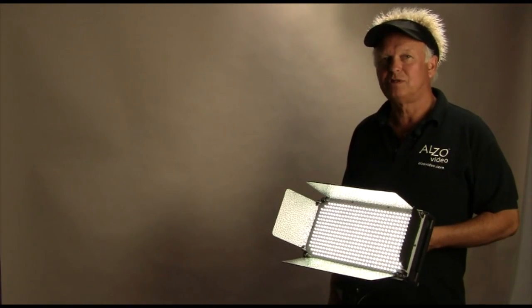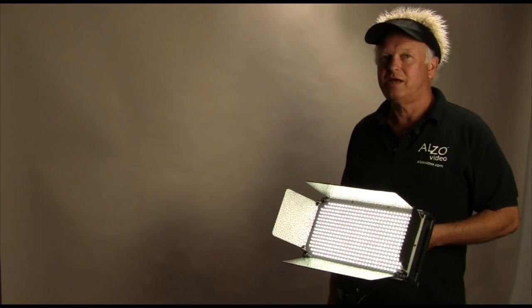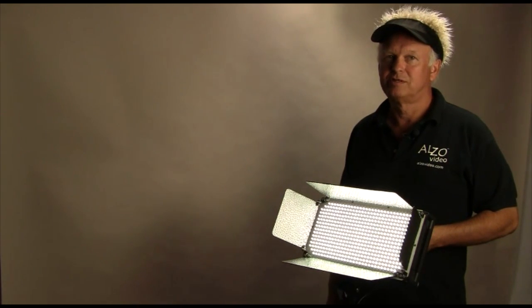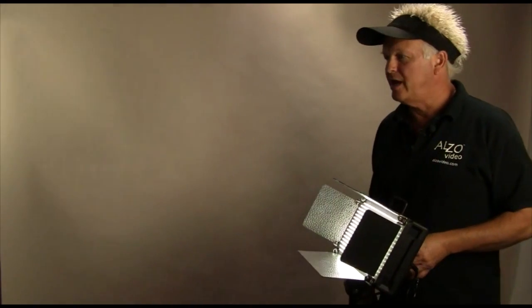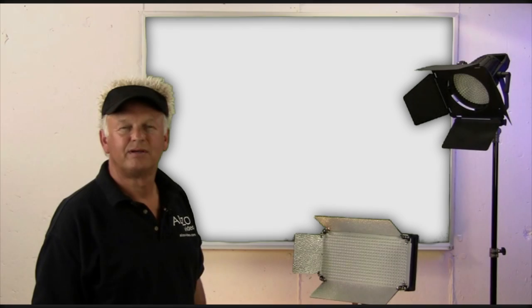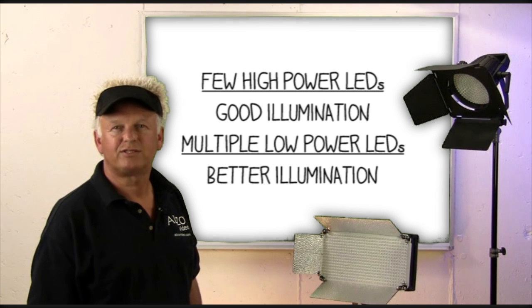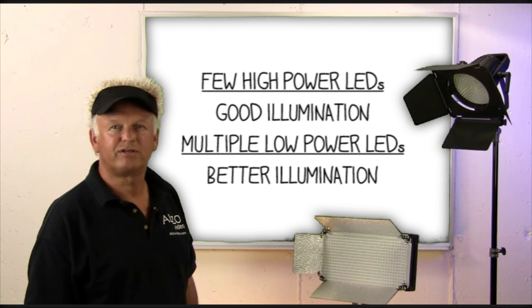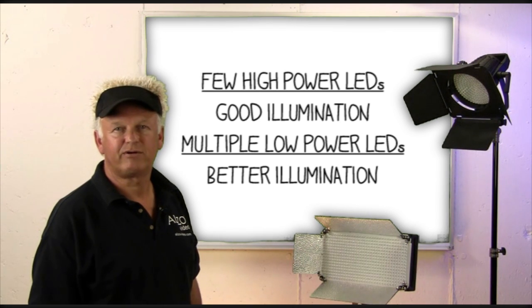LEDs are small low power devices, and any usable video production lights will employ hundreds of these LEDs. These LEDs are arranged in an array, and an undiffused light source will produce step shadows as shown in this display. There are high-powered white LEDs with 1 to 3 watts of output power, but I find that many small low power LEDs produce better illumination than a few high-powered LEDs.